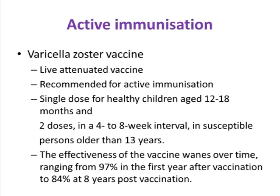The effectiveness of the varicella vaccine wanes over time — as high as 97% in the first year after vaccination, declining to 84% at eight years post-vaccination. This explains why adults in tropical areas can still show seronegative results even if previously vaccinated, as immunity may have waned. That concludes the discussion on chickenpox. Thank you very much — please subscribe and keep watching, and have a great year.